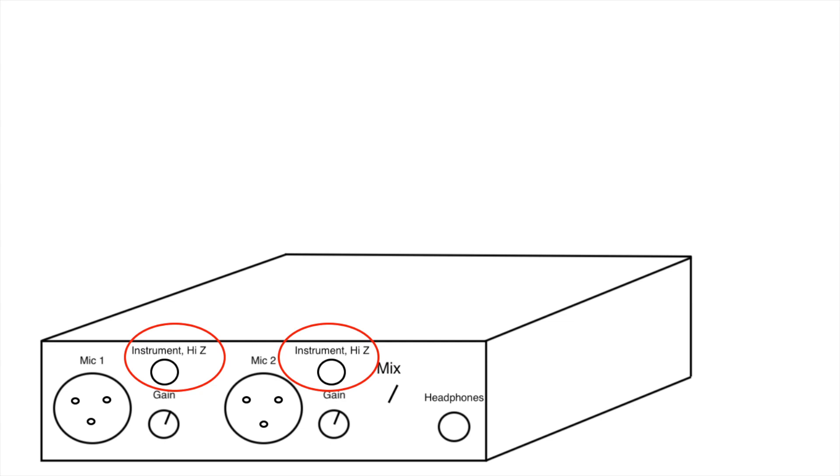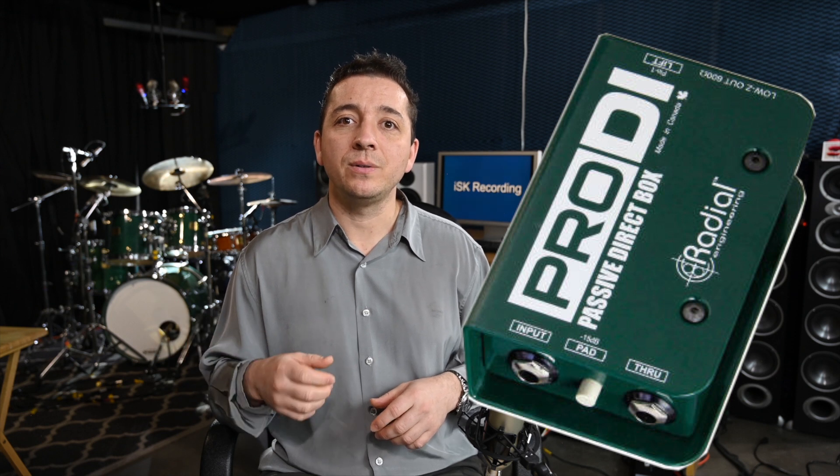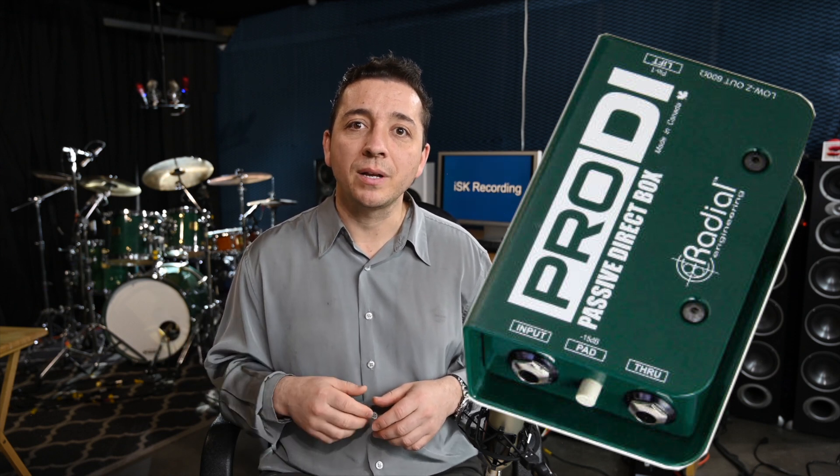Another feature most interfaces will have is called Hi-Z inputs. Hi-Z stands for high impedance, and the output of a guitar is high impedance. If you're recording an electric guitar DI — that means direct inject, plugging straight from the guitar into the interface — you need a Hi-Z input. If you don't have the DI input right on your interface, that's no problem. You can still record the guitar DI, but you need to purchase a separate DI box that converts the guitar input into an XLR output, and then that gets plugged into the preamp.